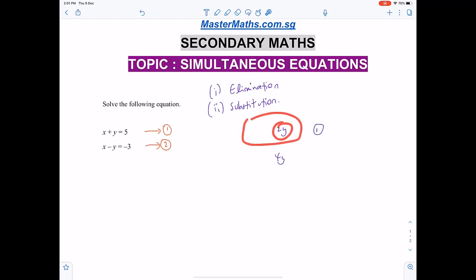First step: make the item you want to eliminate have the same number. So if you're eliminating y, make sure both have the same coefficient - here 1 and 1.